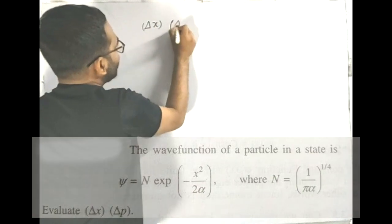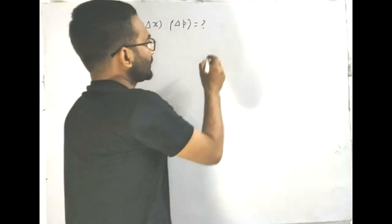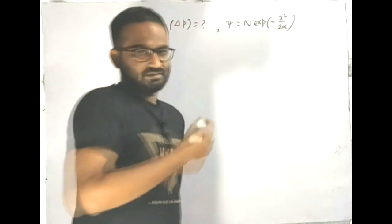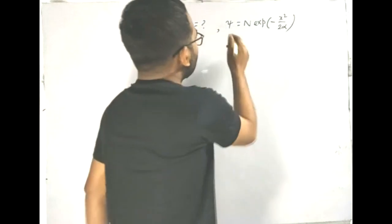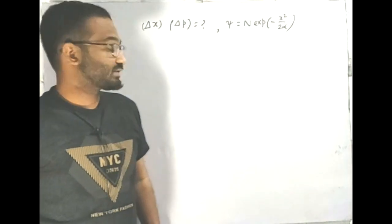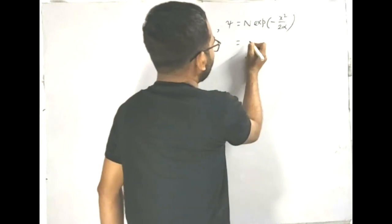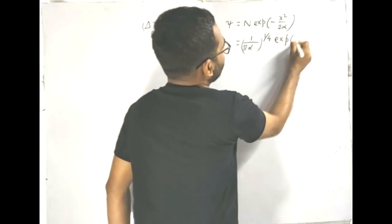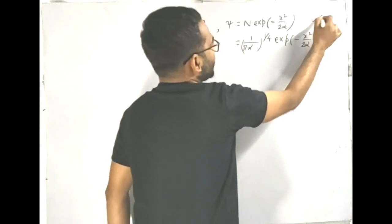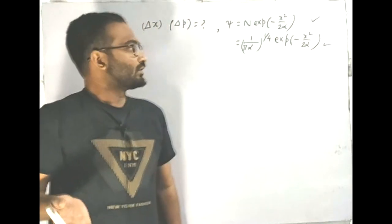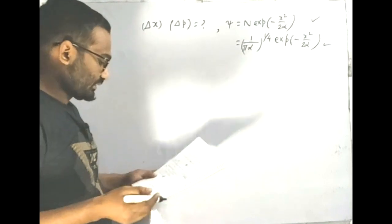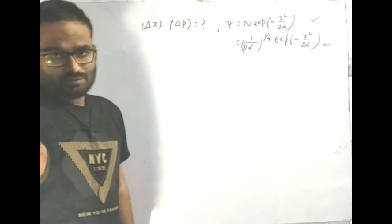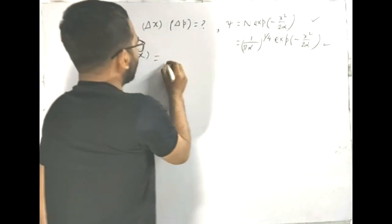We have to find out delta x and delta p. The wave function psi equals N exponential minus x squared by 2 alpha is given. This is unnormalized, but they have provided the normalization constant N equals 1 by pi alpha to the power 1/4, so the normalized wave function is N exponential minus x squared by 2 alpha. This makes our calculation easy.